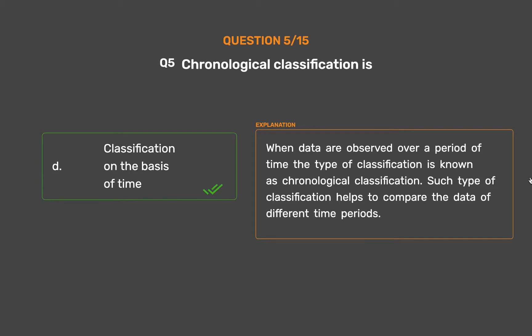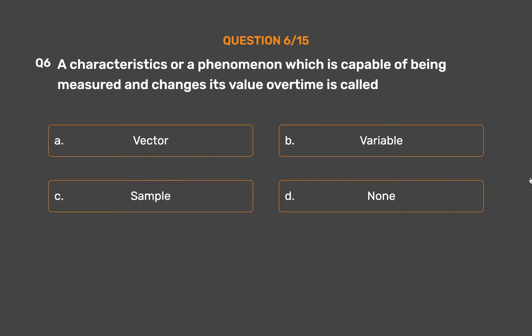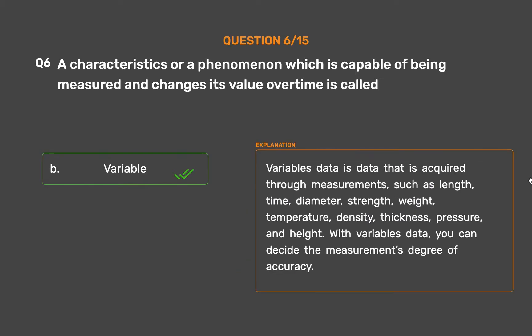Such type of classification helps to compare the data of different time periods. Question number 6. A characteristic or a phenomenon which is capable of being measured and changes its value over time is called: Option A: Vector. Option B: Variable. Option C: Sample. Option D: None. The correct answer is Option B: Variable.